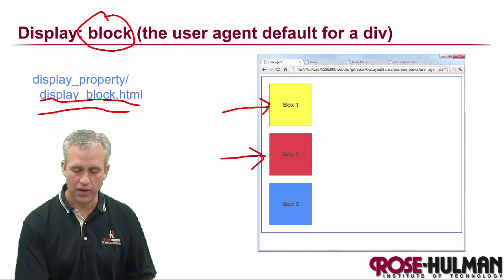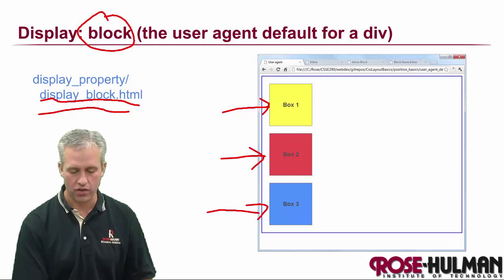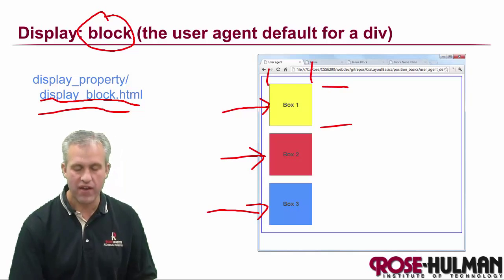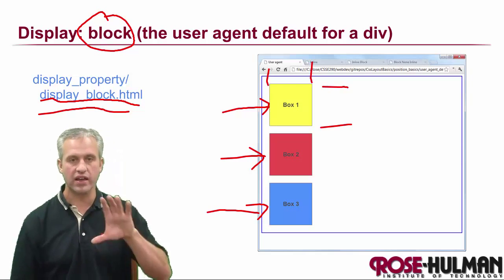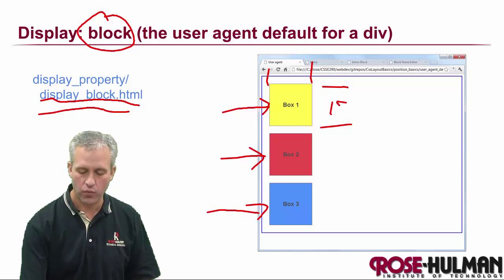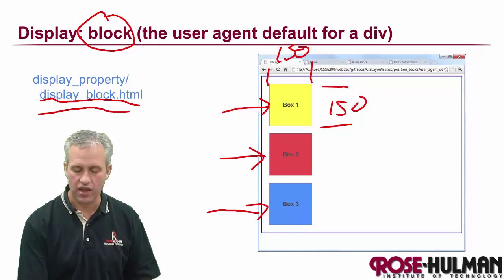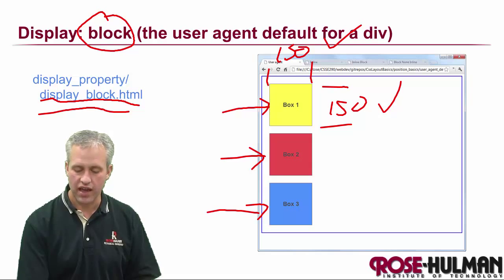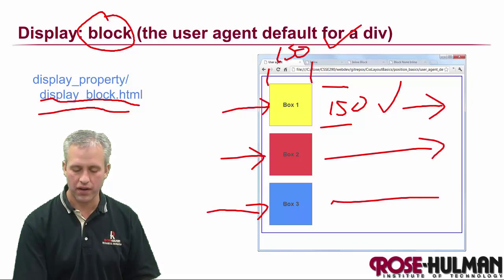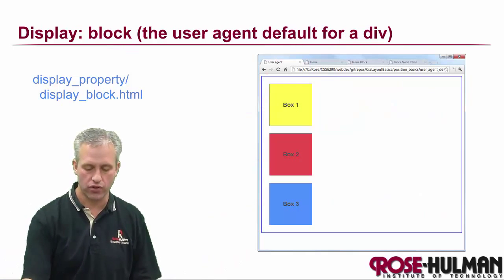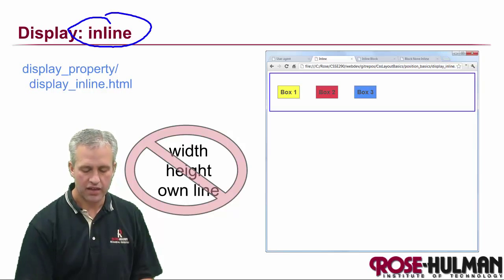This example has a width and height set — 150 by 150. With display block, you can see that those width and height values are respected. It's also interesting that every element gets its own line — nobody shares a line with anyone else. That's what block does by default.